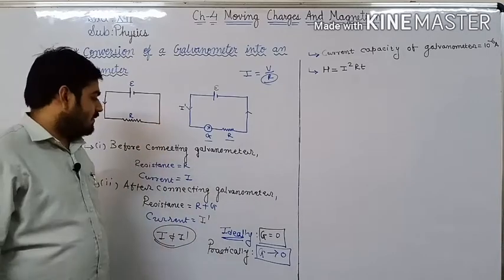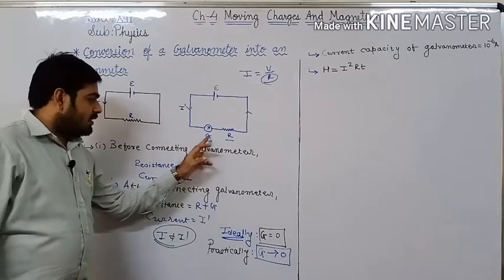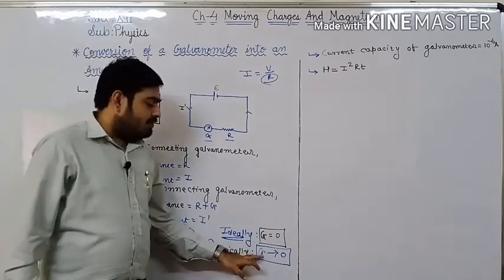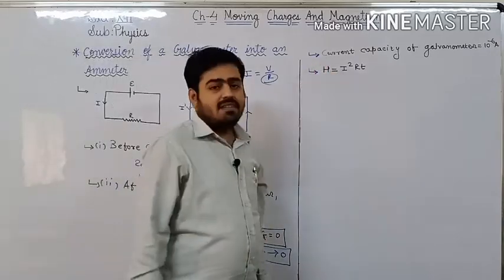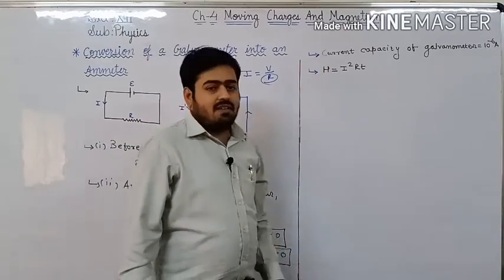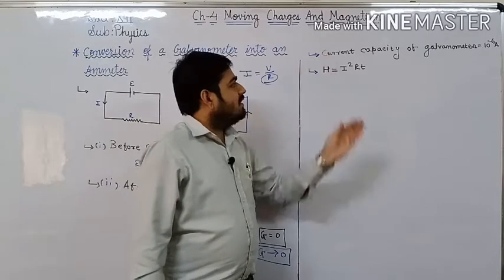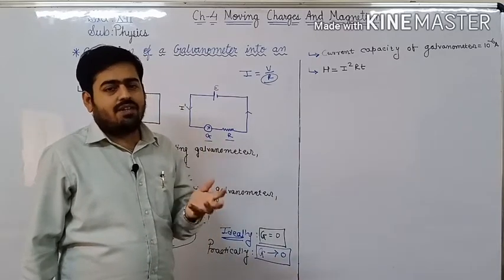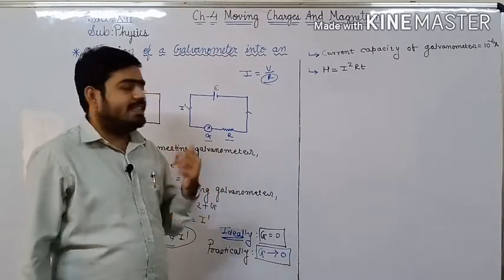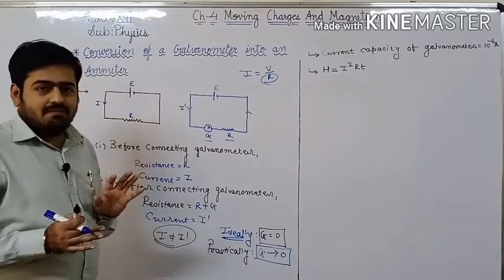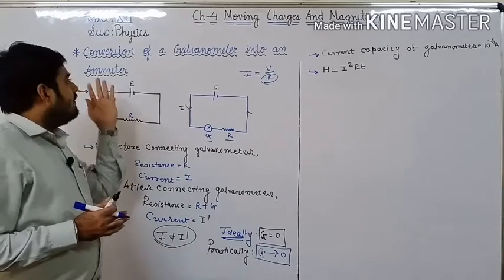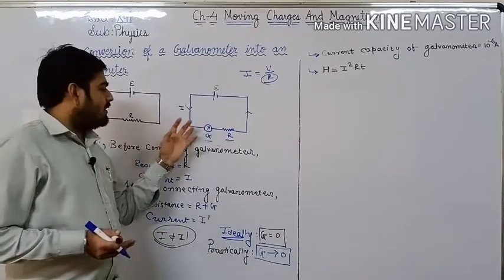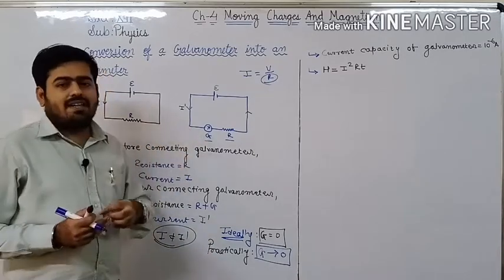So the primary difficulty is that when we connect galvanometer in series, resistance increases so current flow changes — it doesn't remain accurate. The solution is we should minimize the value of resistance of galvanometer. Second difficulty: current capacity of galvanometer — we can pass only few microampere current through the galvanometer. Third difficulty: if we try to pass more electric current through the galvanometer, the coil will get burnt.